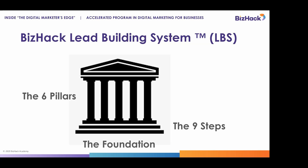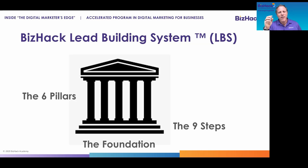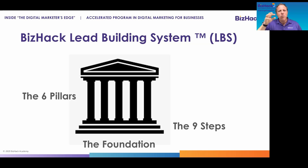The Lead Building System has three elements. First is the foundation — your business story. Then the six pillars, which are true of any campaign you run, digital or not: your campaign objective, your target audience or ideal customer persona, your irresistible offer, your thumb-stopping video — a video that gets people scrolling on their Facebook feed to stop and watch — your compelling messaging, and your call to action. Get these six pillars right and you'll have a successful campaign. If any one pillar is weak, your lead building will collapse. Finally, there are nine steps in our proven process to get you the results you want.